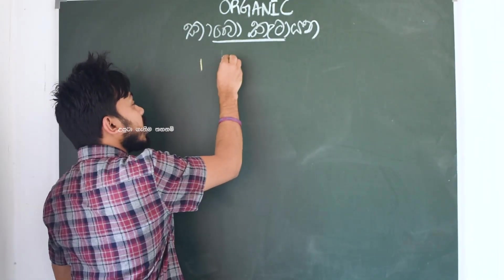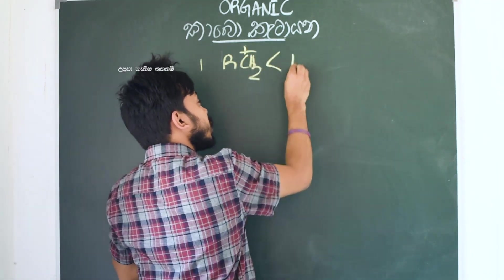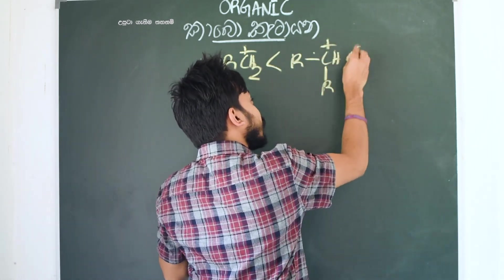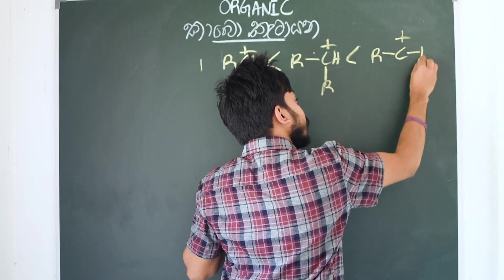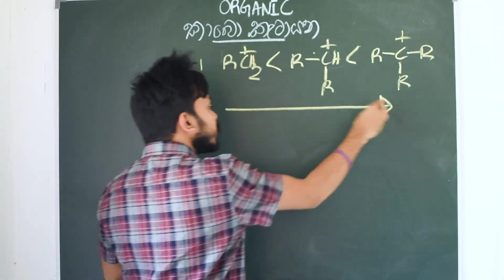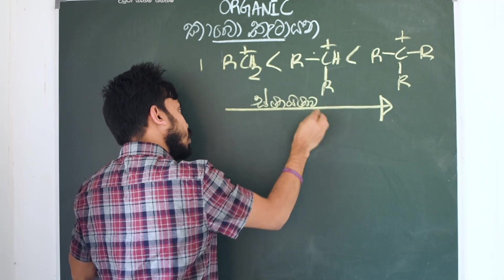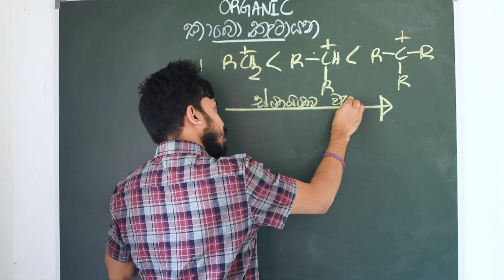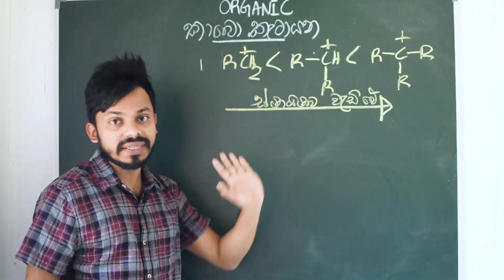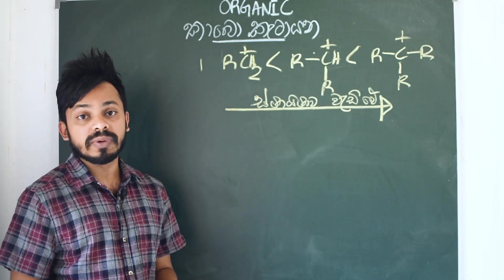It's the carbocation. RCH2+. The formula is ready — we look at the carbocation and it is already written about it by its carbocation, which means that the carbocation has formed.